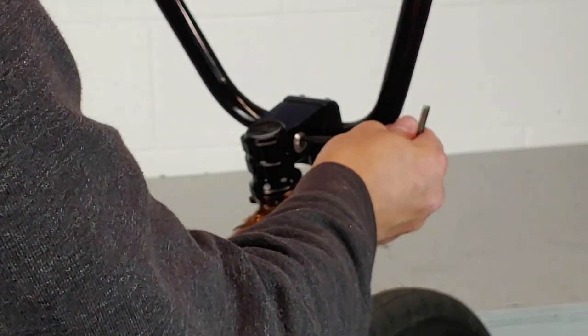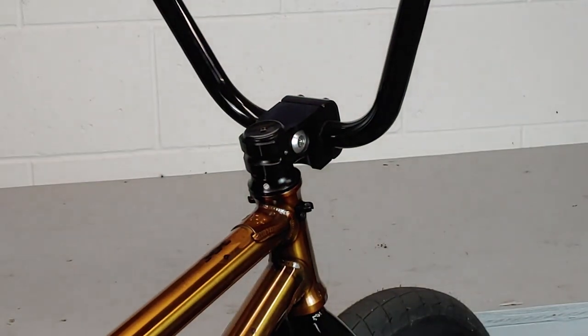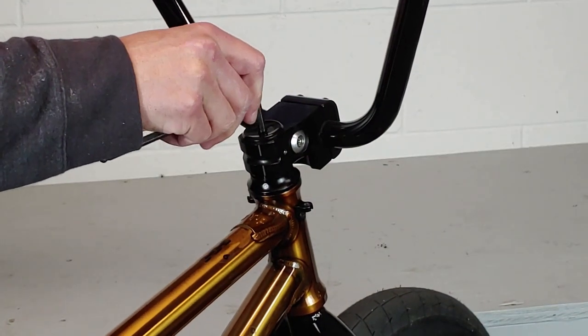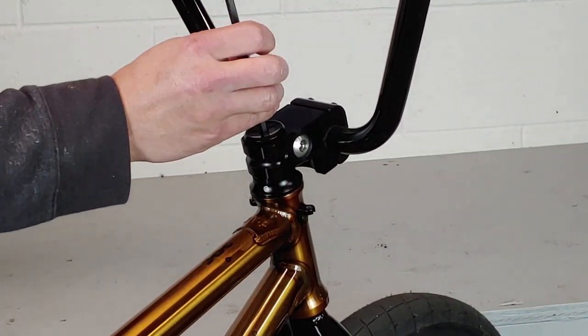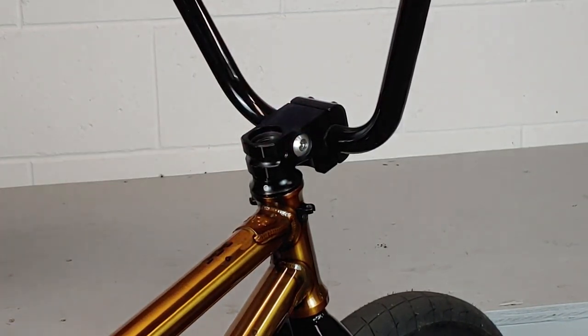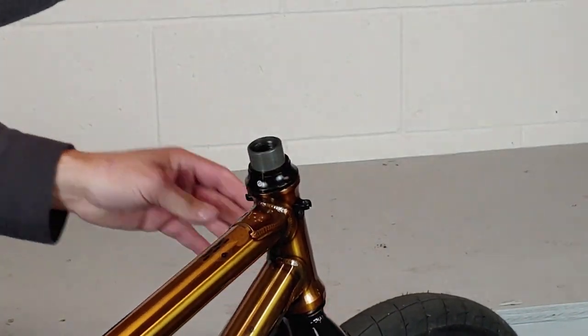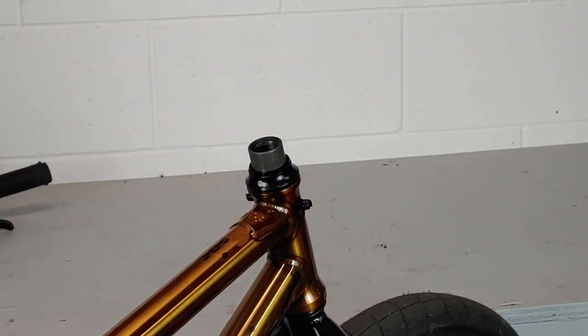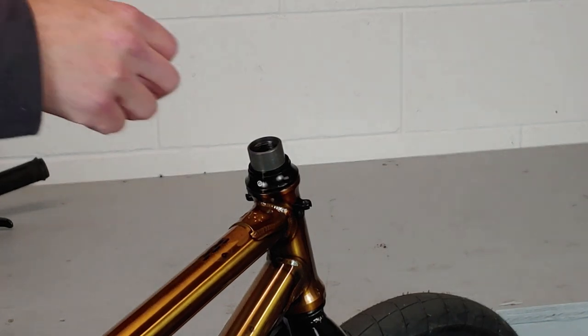Next we're going to remove our stem by loosening the side bolt first, depending on what kind of stem you have, and then loosen and remove the top bolt that goes into your fork. We'll give the bars a little twist, remove the stem, and then install our detangler.